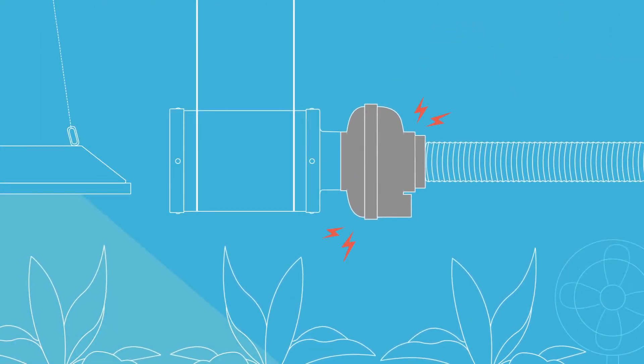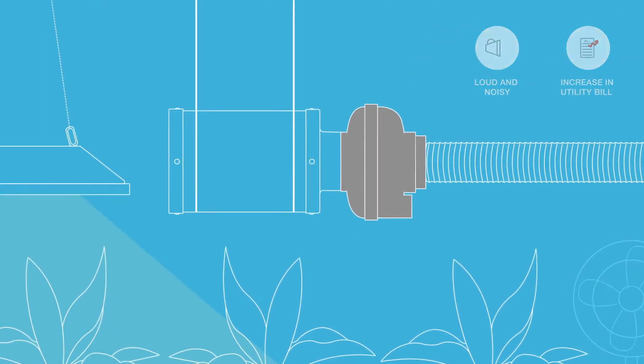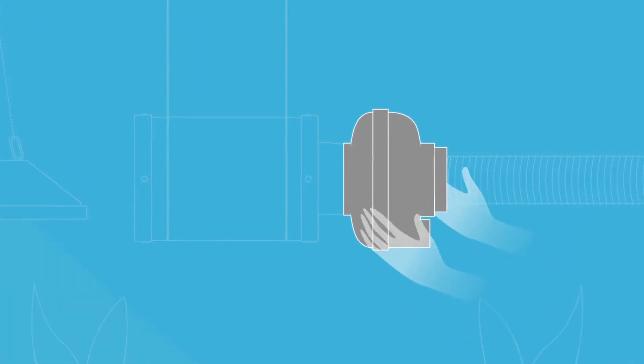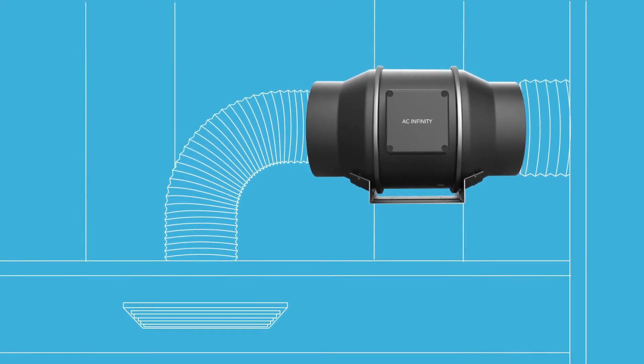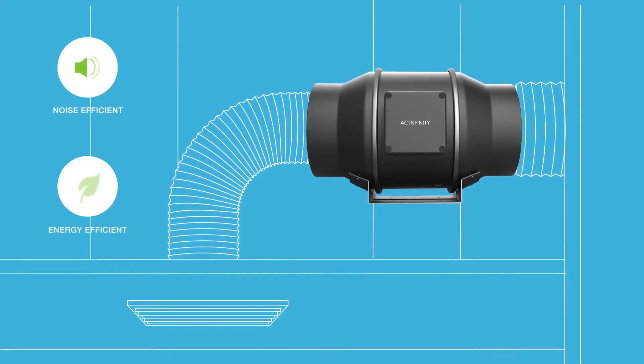But existing fans on the market are often loud and use excessive power. The Cloudline Series by AC Infinity is a new generation of mixed-flow inline fans that are smarter, quieter, and more energy efficient.